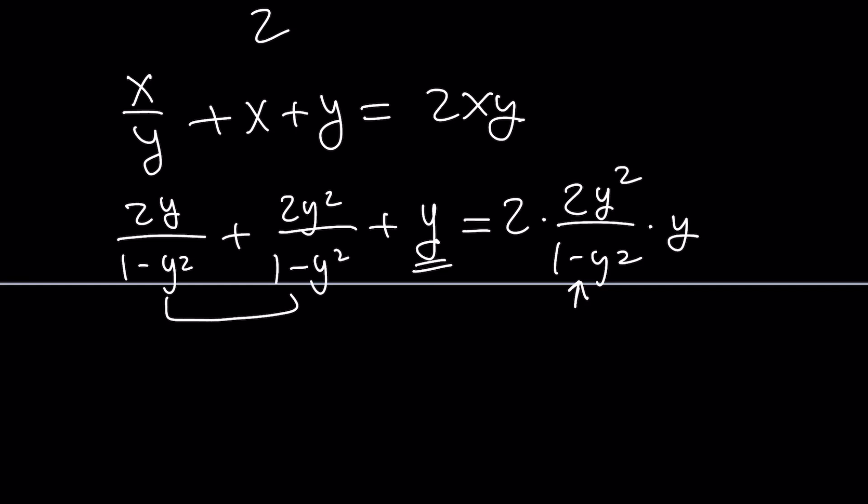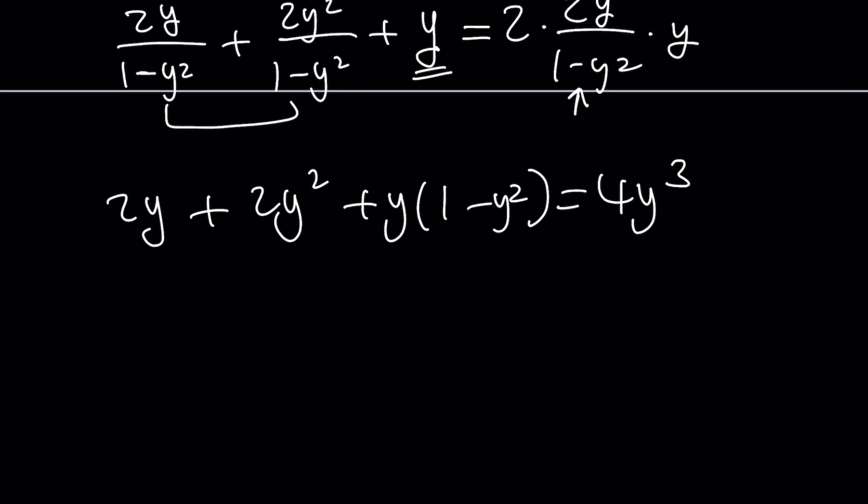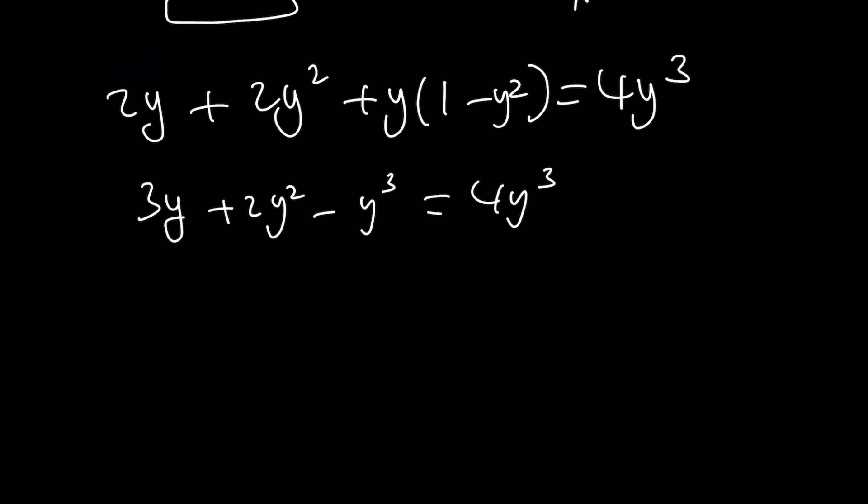Of course, in this sense, y should not equal 1. Is that important? You'll see in a little bit. Let's take care of this common denominator arithmetic. Plus y times 1 minus y squared is 4y cubed. Let's simplify this a little bit. I get 2y plus y, that's 3y. And then I get 2y squared minus y cubed equals 4y cubed. Let's put everything on the same side and come up with a cubic. But this cubic is very easy to solve. 5y cubed minus 2y squared minus 3y equals 0.